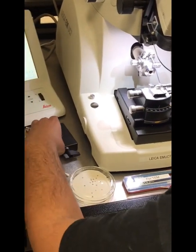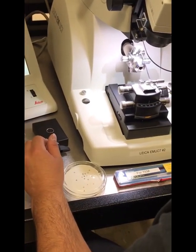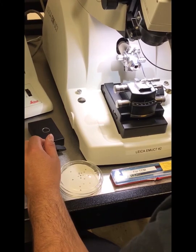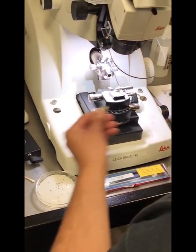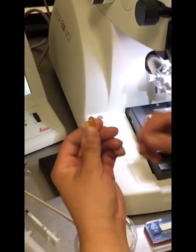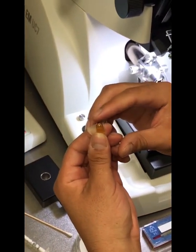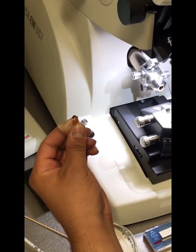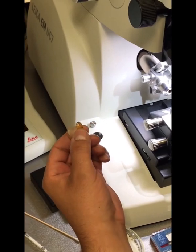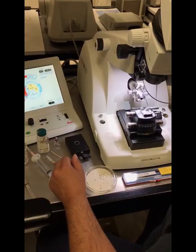Okay, so we're going to start trimming our block. We want our block from our resin block here to have a face that's one millimeter by one millimeter, and preferably in the shape of a trapezoid.